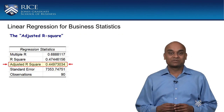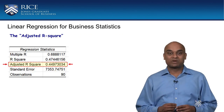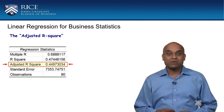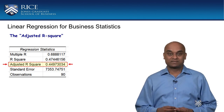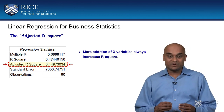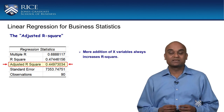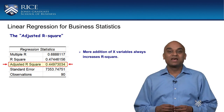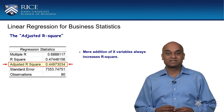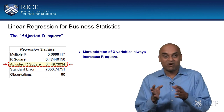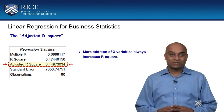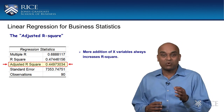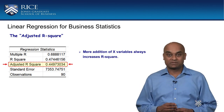Another statistic produced in the regression output is the adjusted R square. Regression is a process where mere addition of additional X variables will increase your R square, irrespective of whether the additional variables make sense or not. The R square may not increase by a whole lot, but it will never go down on addition of variables.